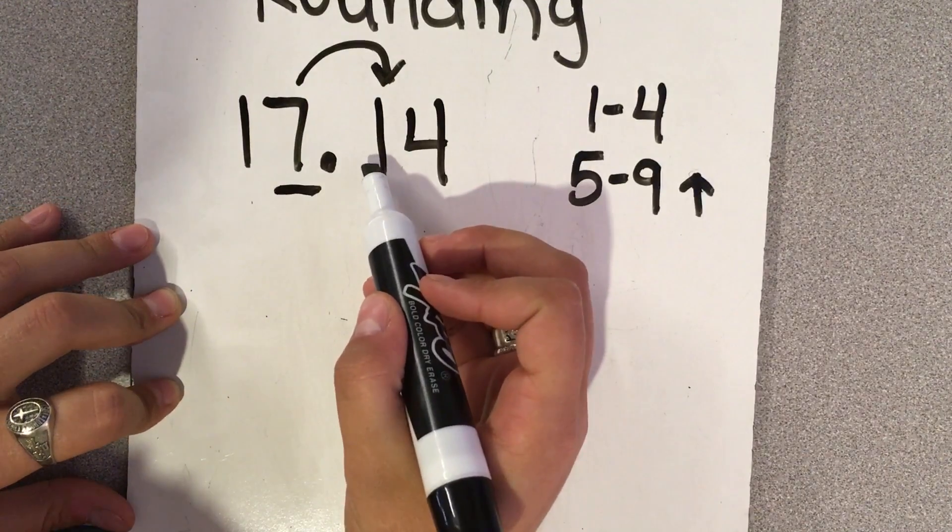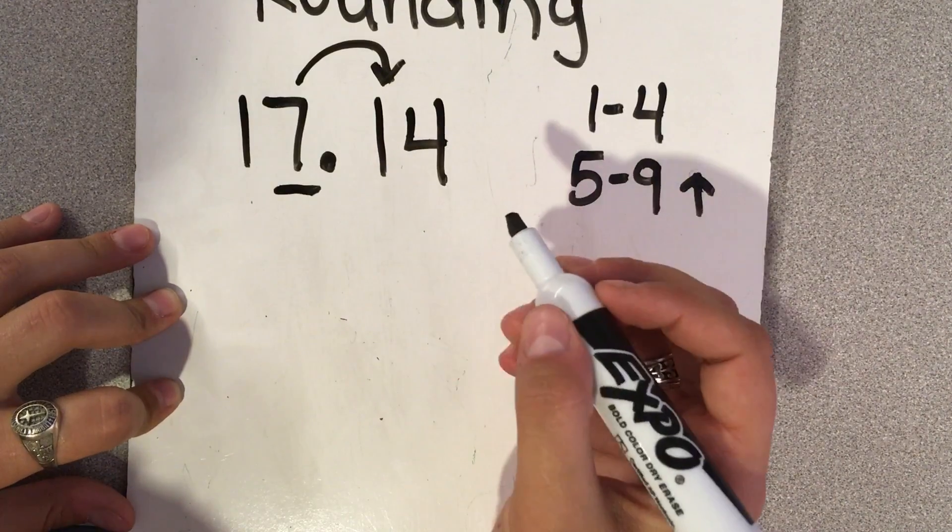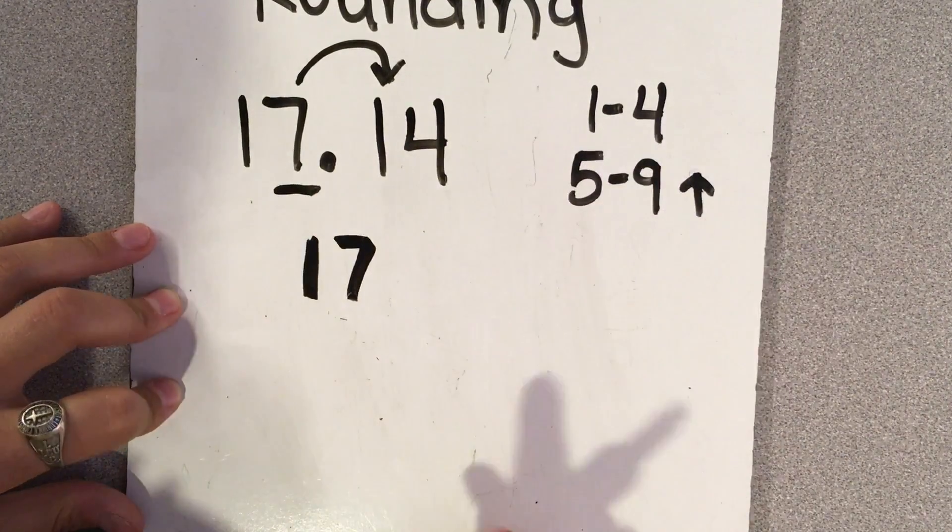So because this is 4 or less, it rests, and this would round to a 17 as the nearest whole number.